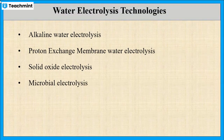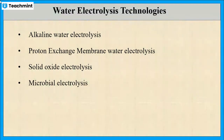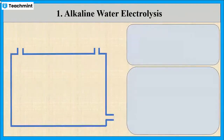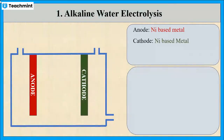Let us see some of these methods in detail. The first method is alkaline water electrolysis. The electrolyzer for this method consists of two electrodes, anode and cathode, made up of nickel-based metals.